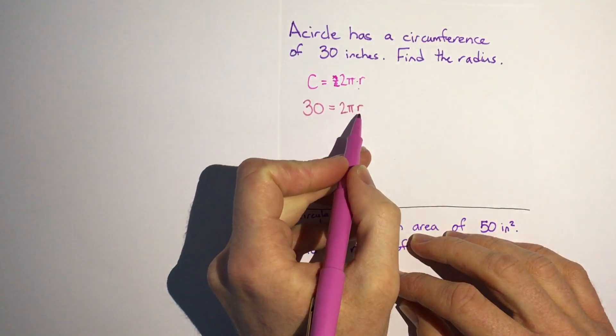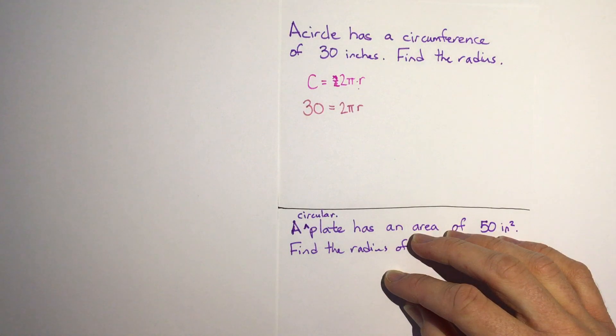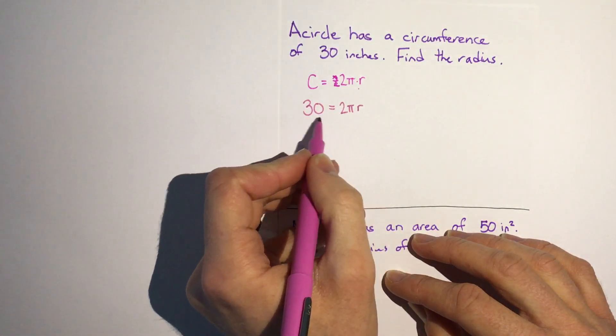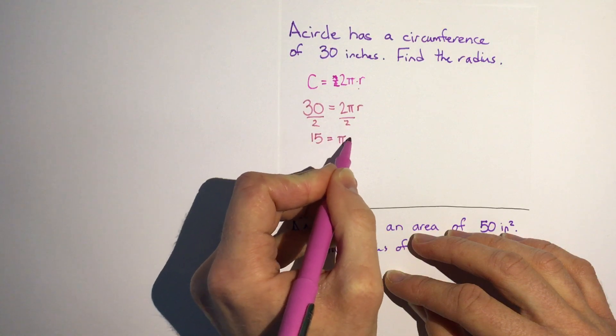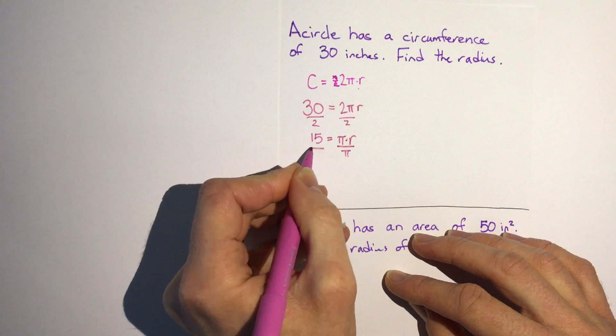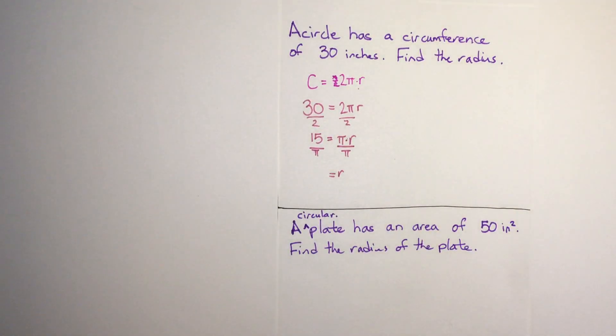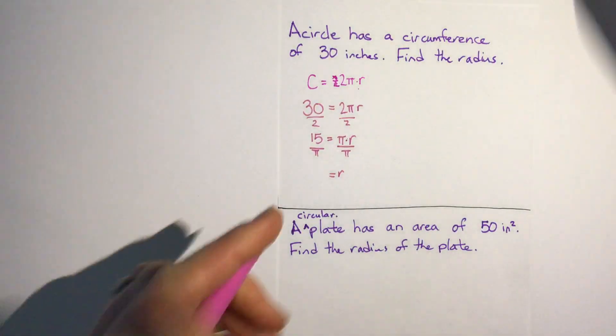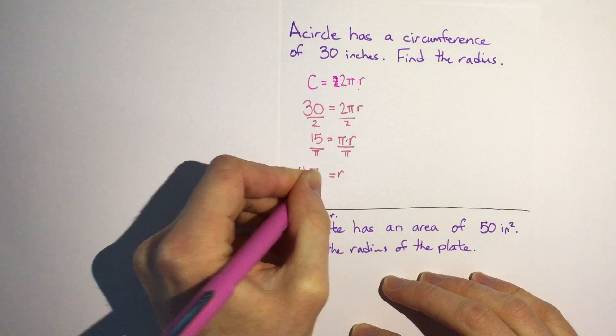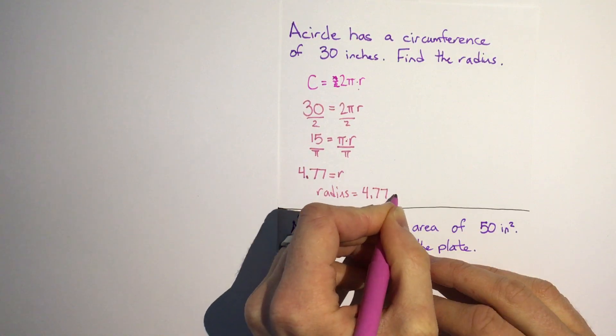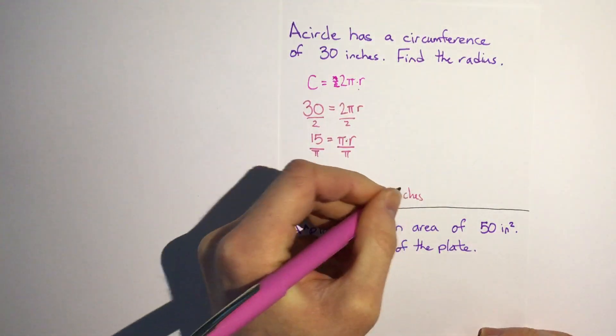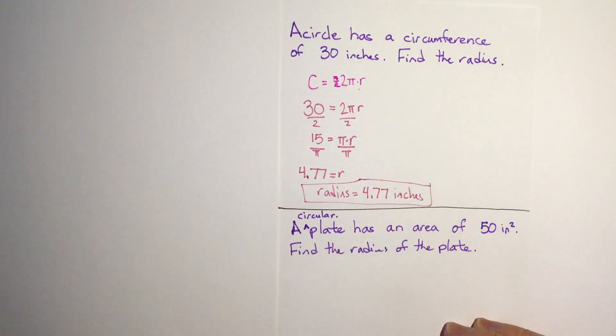Now to figure out what this is, we know 2π times some radius would equal 30, so we have to divide by 2π. What's easiest is to start by dividing by 2, so we get 15 equals π times the radius. And then we can divide by π. If we do that we can plug that in on our calculator, and if we do that we get about 4.77. So our radius is 4.77 inches. Here it didn't say to do an exact answer, so we put it in our calculator and we got the number for that, 4.77.